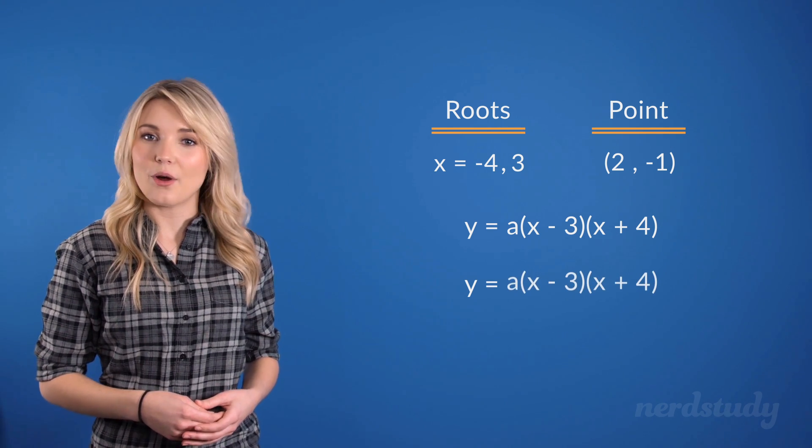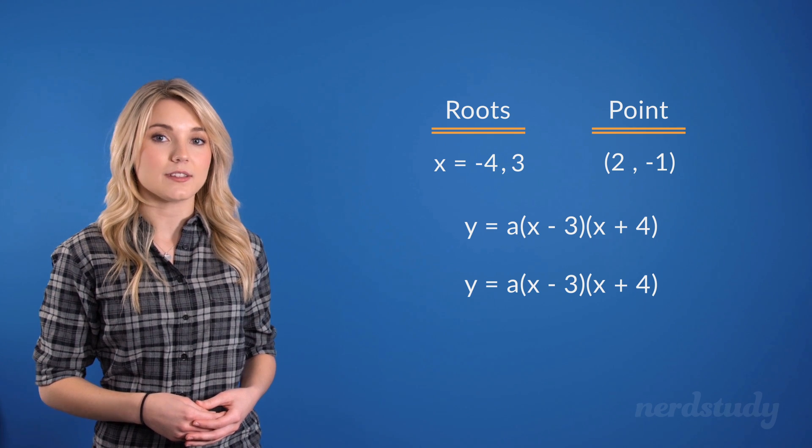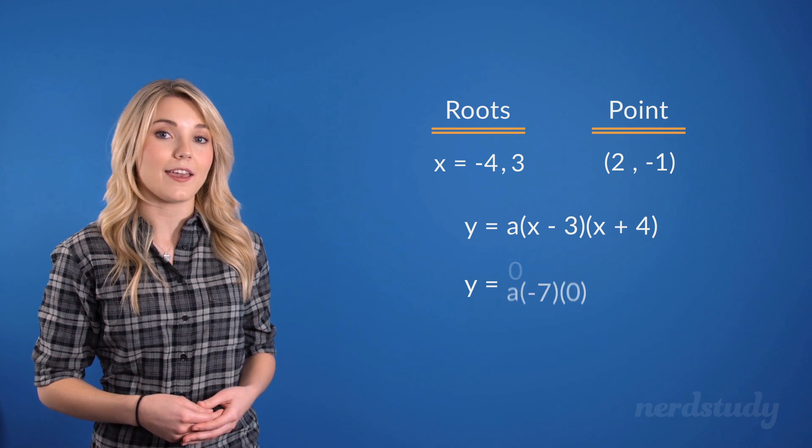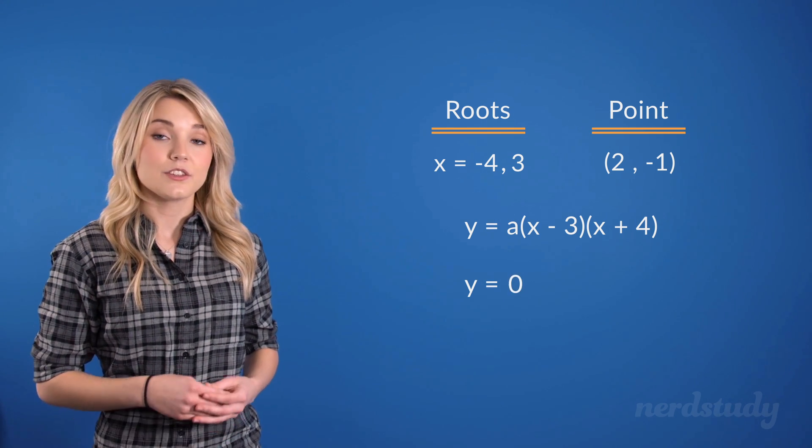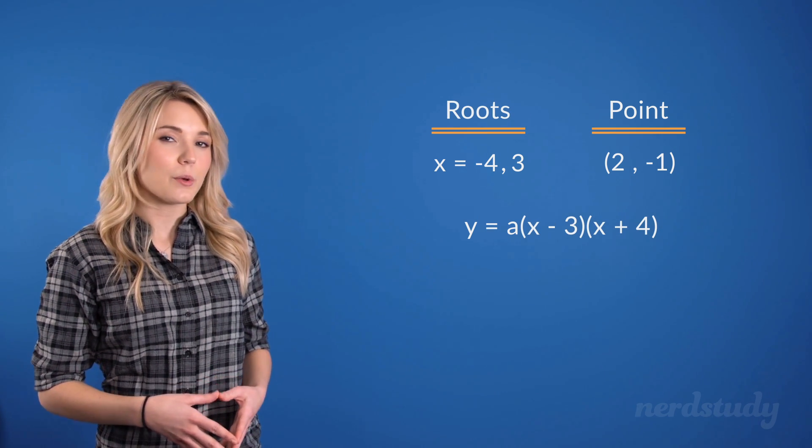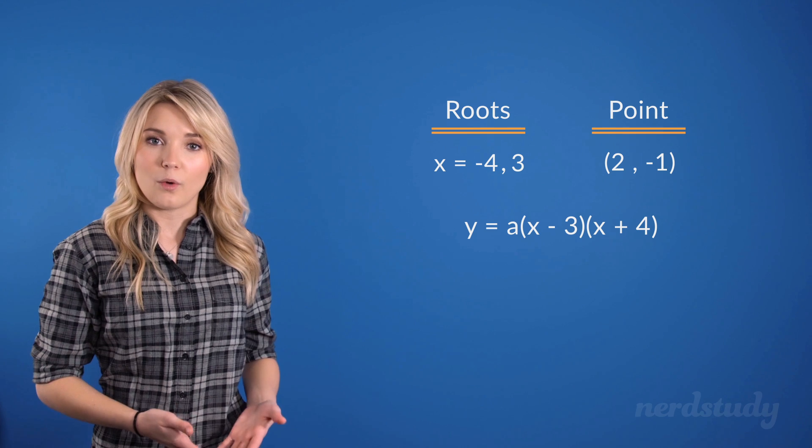And also, notice how when we let x equal to negative 4, this here equals 0, giving us a final result of y equals 0 as well. So as you can see, our roots are represented correctly. But how do we find out what the a is in this equation?